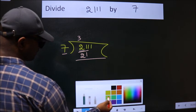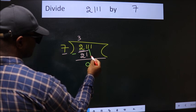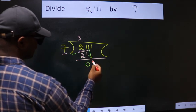Now we should subtract. We get 0. After this, bring down the beside number. So, 1 down.